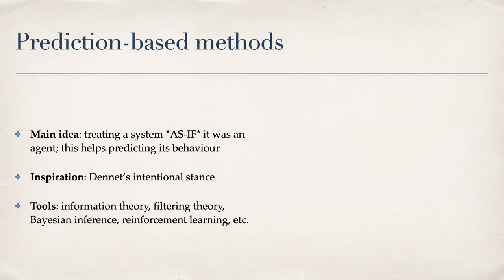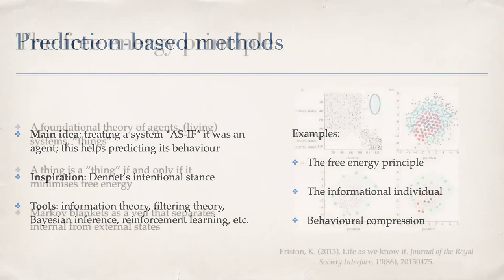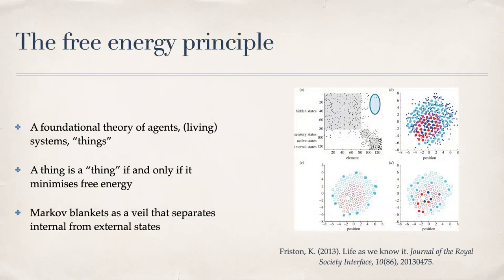Dennett's intentional stance is the main inspiration for this class of approaches. You can have a system in front of you and decide whether it is an agent depending on how predictable it is, using tools from information theory, filtering theory, inference, reinforcement learning, etc. Some examples I will cover are the Free Energy Principle, the Informational Individual, and the Behavioral Compression method.